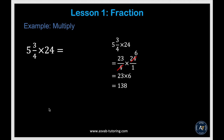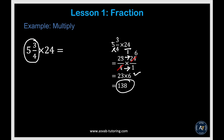Now let's learn how to multiply fractions. As mentioned, anytime you have a mixed number, you must convert it to an improper fraction before performing any operation — addition, subtraction, multiplication, or division. Converting the mixed number here: 4 times 5 is 20 plus 3 is 23 over 4, and 24 over 1. You can multiply top to top and bottom to bottom, then divide, or simplify first and then multiply. That gives you 138.